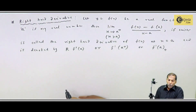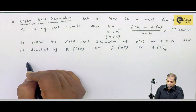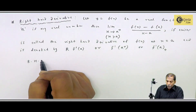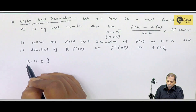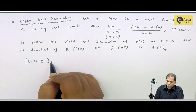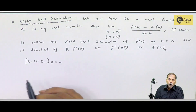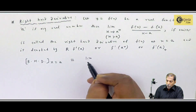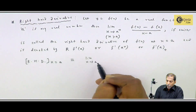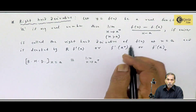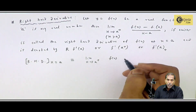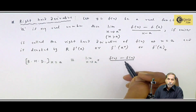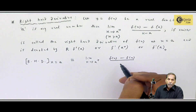So in short, I can write: the right-hand derivative at point x equal to a is equal to the limit as x tends to a-plus of f(x) minus f(a) upon x minus a.